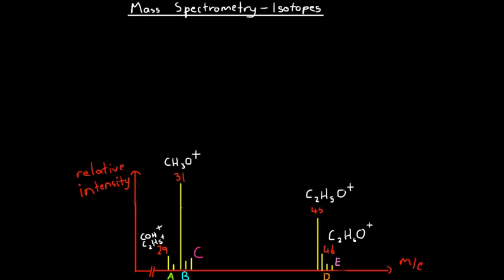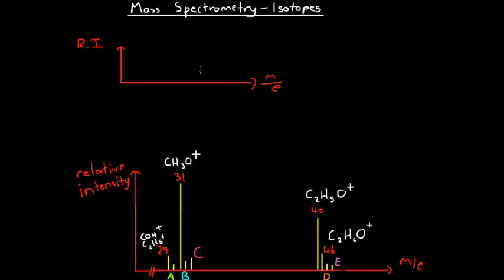If we've got peaks on our mass spectrum — with mass over charge on the horizontal axis and relative intensity on the vertical axis — and we go through using the relative atomic masses of the fragments coming up in the mass spectrum, then we'll get a set of peaks that look like this.